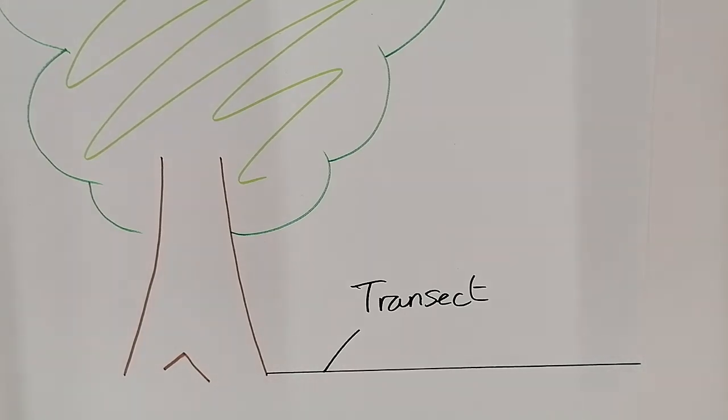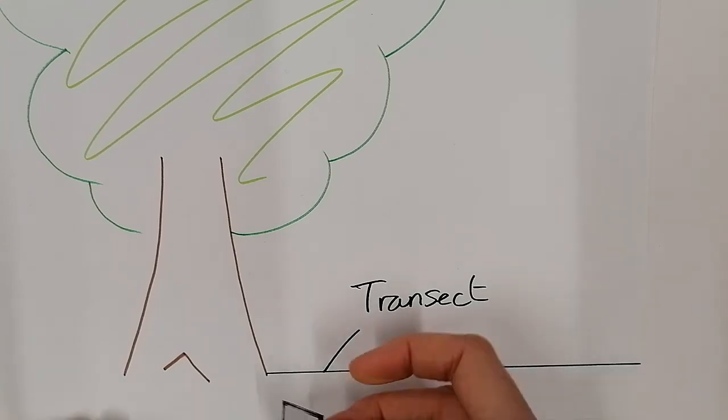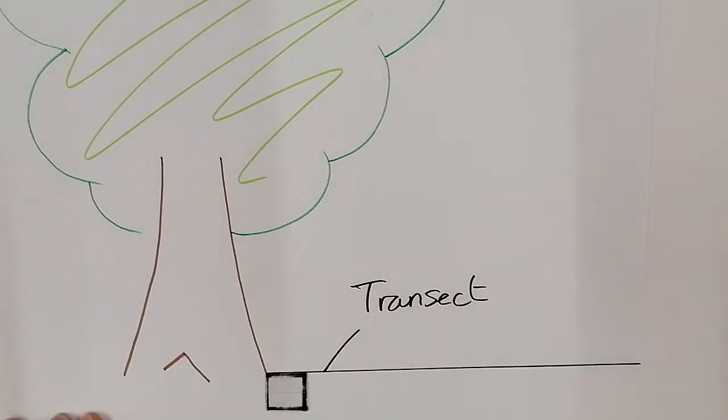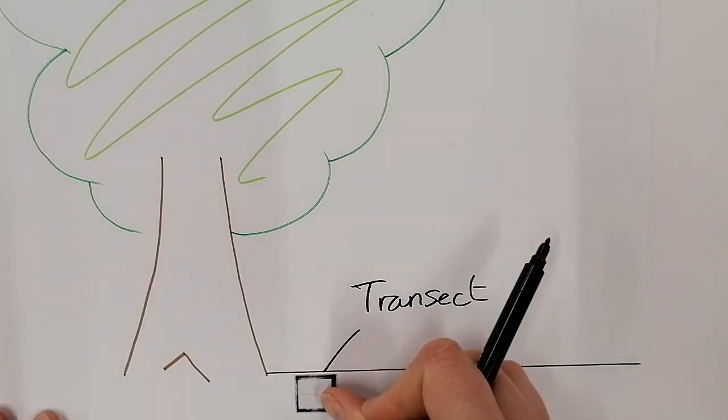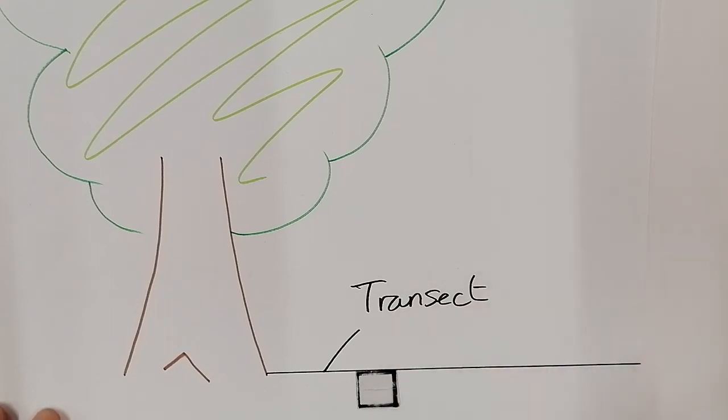So this is our tree, and we are heading off into the distance to see how far away we need to travel in order to answer our question: how far away from the tree will the flowers survive? So we would put our quadrat down right next to the tree at zero meters, and we would count to see what species of plants we'd found and how many there were, and we'd write it down.